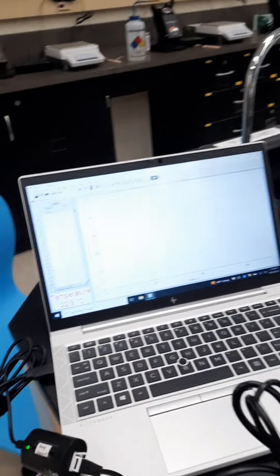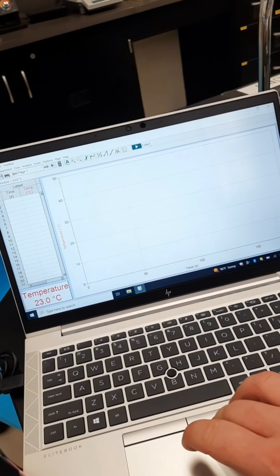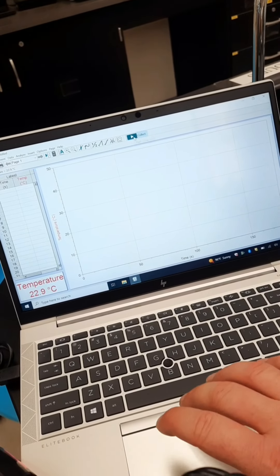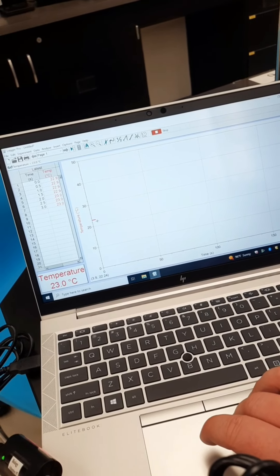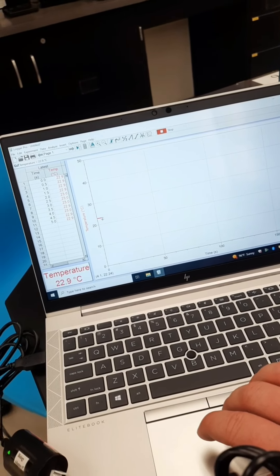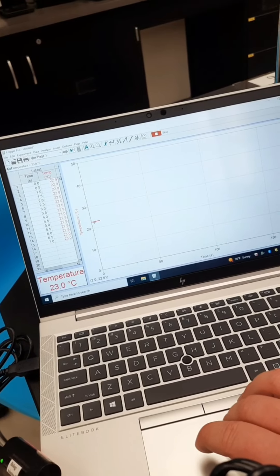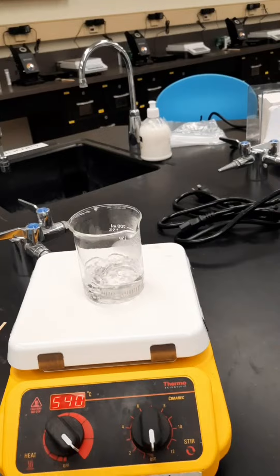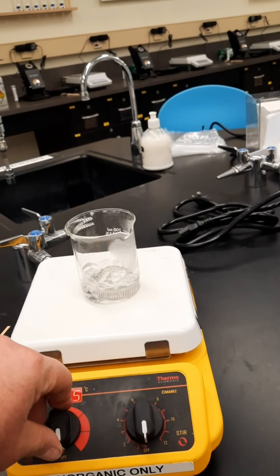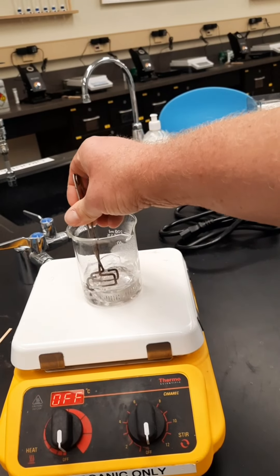To start the experiment we want to hit collect in the upper right hand corner and we see our starting temperature of 22.9 and we see a straight line going across here. Now we want to put our hose fitting starting at 100 degrees Celsius.